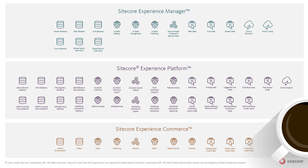The Sitecore 9 product series consists of three major products: the Sitecore Experience Manager, the Sitecore Experience Platform, and finally, Sitecore Experience Commerce. Each of the Sitecore products contains a number of logical entities, which together with a number of cloud services, forms the entire functionality of the Sitecore platform.